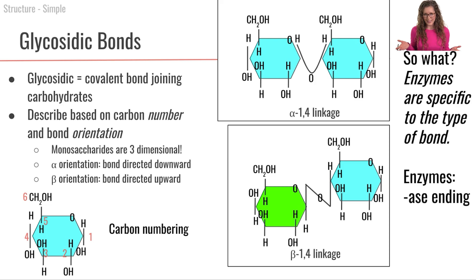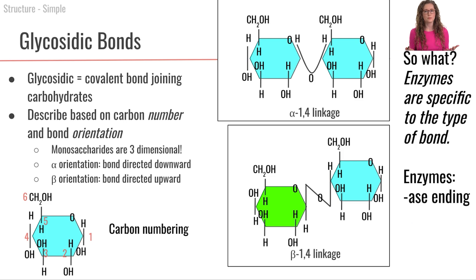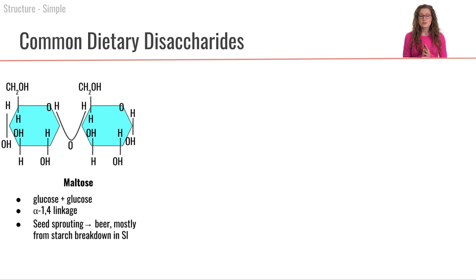Now, why do we care? We care about this a lot because enzymes are specific to the type of glycosidic bond. As we work through the rest of this lecture, every time that you see a name that has an '-ase' ending, that is going to clue you in to the fact that it is an enzyme — a protein that will be catalyzing chemical reactions. So now let's take a look at some common dietary disaccharides. Di meaning two — so two monosaccharides bound together by a glycosidic bond.